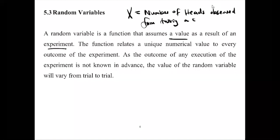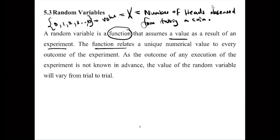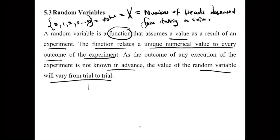X is going to assume some value — it could be zero, one, two, three, or up to ten if you have ten tosses. The function relates a unique numerical value to every outcome of the experiment. Since the outcome is not known in advance, this is where the randomness comes in — it will vary from trial to trial, meaning each individual toss.